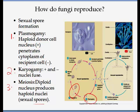Fungi undergo alternation of generations — one generation will form asexually and the other generation will give rise sexually and then asexually, alternating between the two stages.